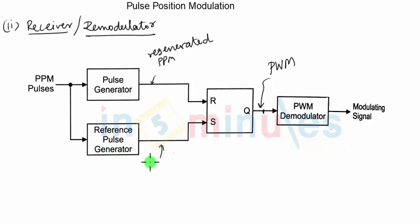Reference pulse generator will be nothing but the original sampling pulses, or simply a sequence of pulses that we require to give to the RS flip-flop. So regenerated PPM and the pulses generated with the help of PPM signal itself are given to RS flip-flop.